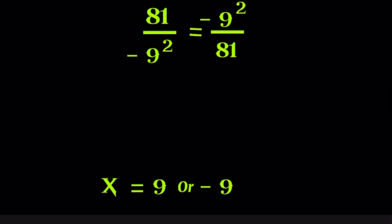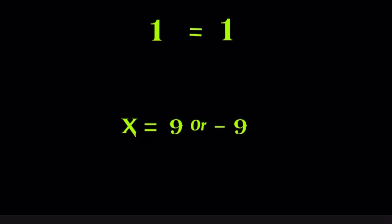If we substitute x equals negative 9, negative 9 squared is still 81. The exact same thing happens again. Both sides are equal, which confirms that both values satisfy the equation.